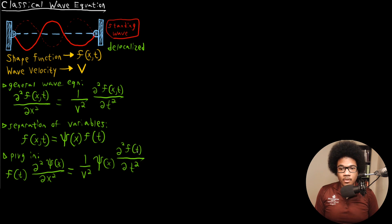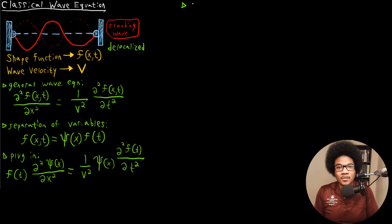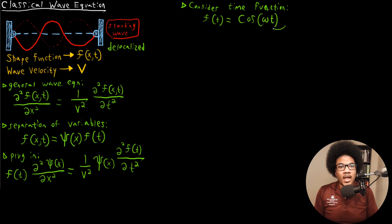Now, in order to solve this, we want to get rid of the time dependency. We can do that by choosing the function of time in a very particular way. If we choose a function on the right-hand side that gives us the same function back as the second derivative, we can get rid of the time dependency. Let's consider the following time function: we'll use cosine(ωt), where omega is our angular frequency of the wave. We're going to use this as our function of time.